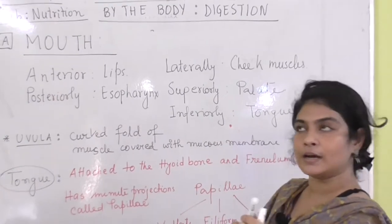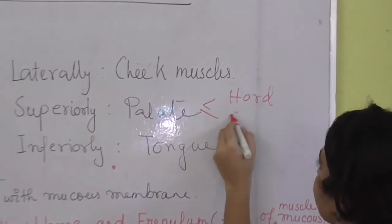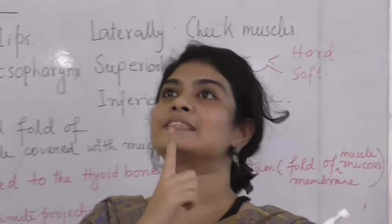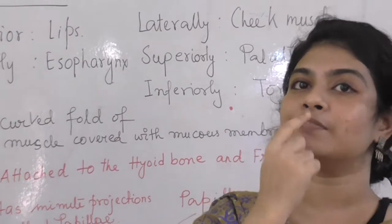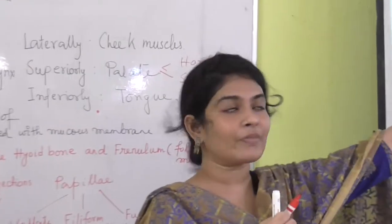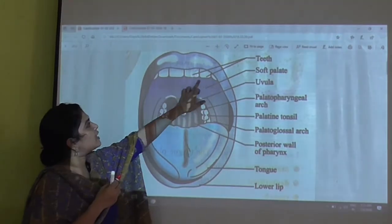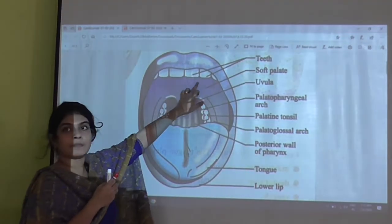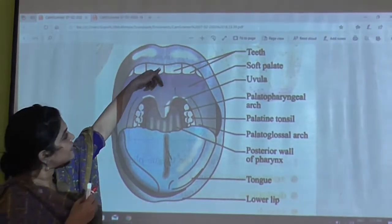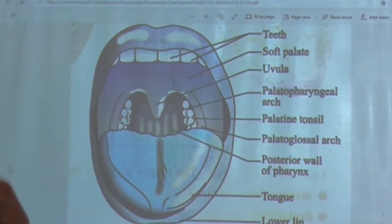The palate is of two types: the hard palate and the soft palate. The hard palate is the anterior portion of the palate, and the soft palate is the posterior part of the mouth, which is softer.